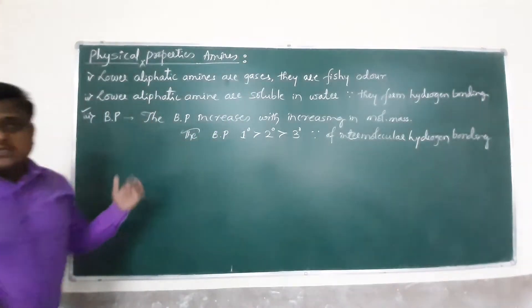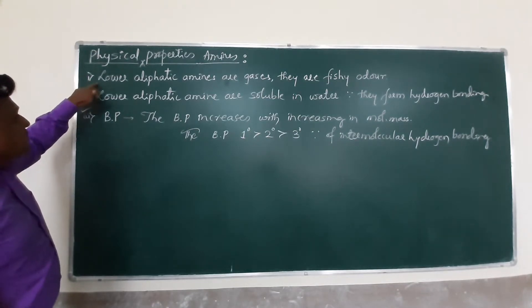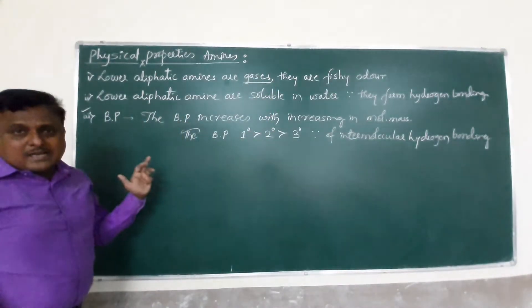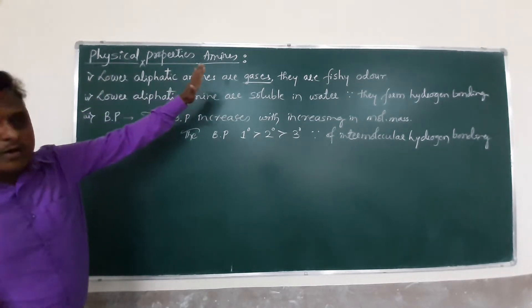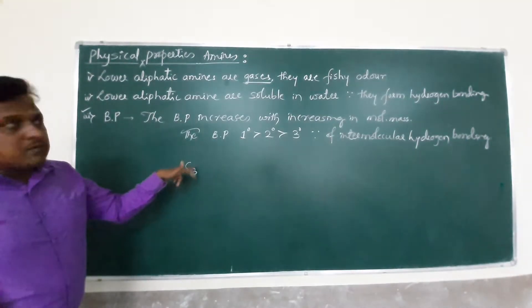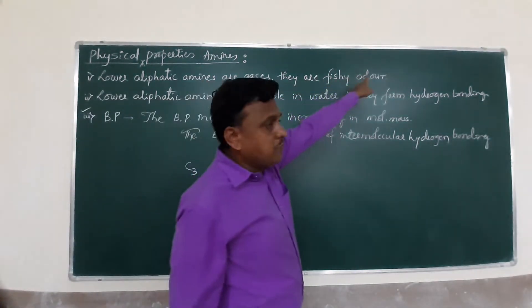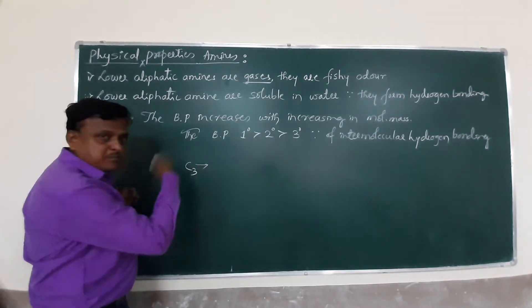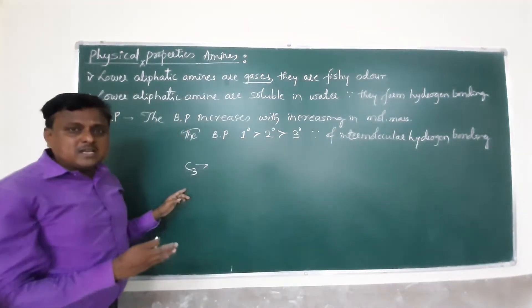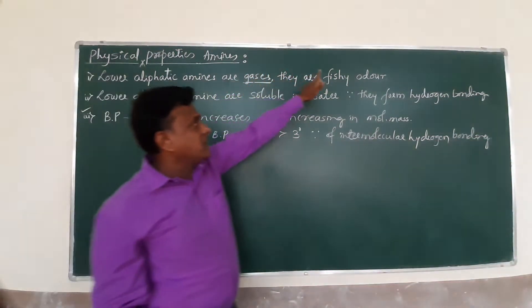The first physical property: lower aliphatic amines are gases. Amines are available in gas, liquid, and solid form, but lower amines up to carbon number 3 — meaning C1, C2, C3 — are available as a gas. Methyl amine and ethyl amines are gases; they have a fishy odor.